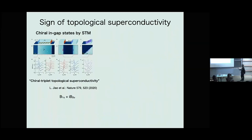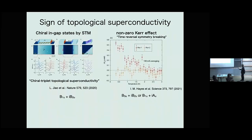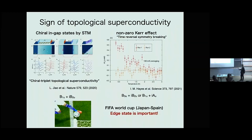UTe₂ shows signs of topological superconductivity. An STM experiment indicates chiral triplet topological superconductivity. Also, from the muon spin rotation (μSR) effect — a non-zero signal — indicating time-reversal symmetry breaking, and an order parameter has been proposed. Recently I recognized that the edge state is very important: not only from physics but also from the FIFA World Cup, Japan versus Spain — it was 0 bonds against Spain, and I'm very proud of this. But this indicates edge states are very important.